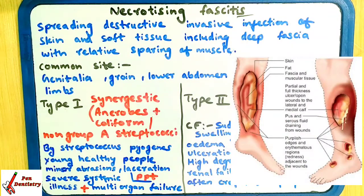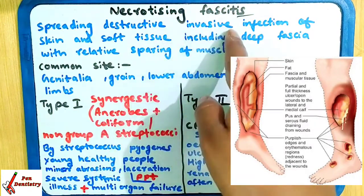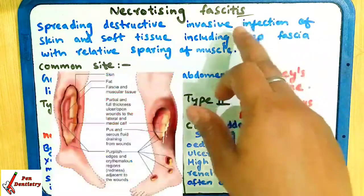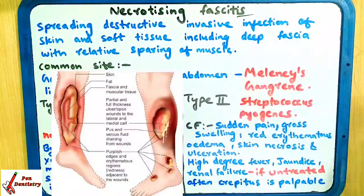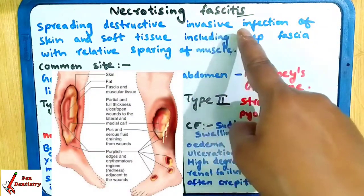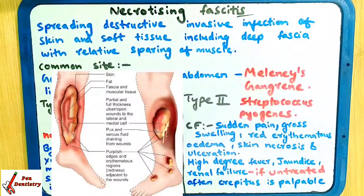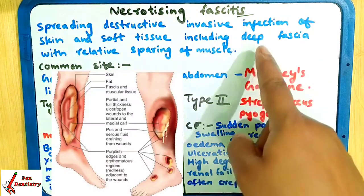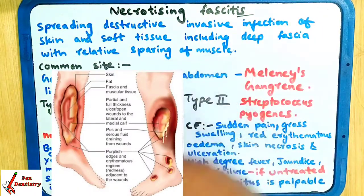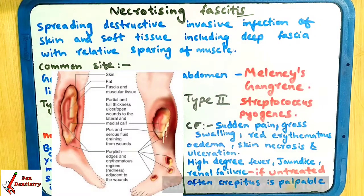Today's topic is Necrotizing Fasciitis. It is an invasive infection — invasive means it spreads in a very fast and rapid way. It is very destructive, affecting the skin and soft tissues, including the deep fascia region and the muscles. This is Necrotizing Fasciitis.